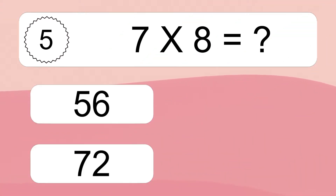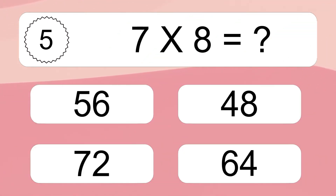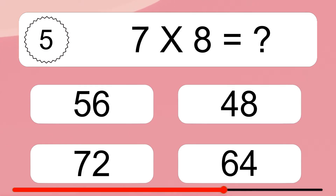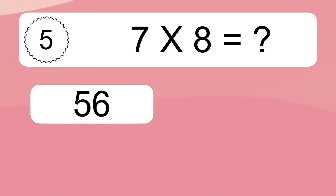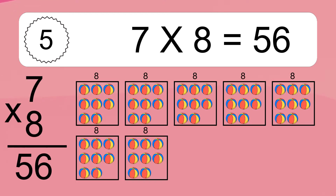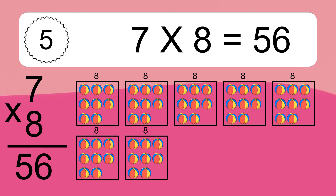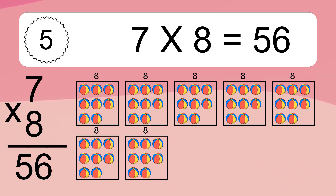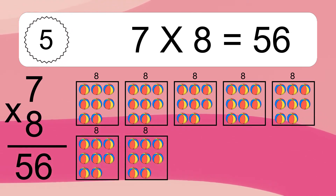Seven times eight equals what? Seven times eight equals 56. We have seven boxes, and each box has eight colorful balls inside. If you count all the balls in all the boxes together, you will have seven times eight balls. This equals 56 balls.